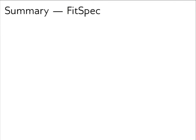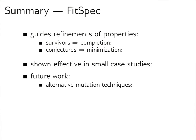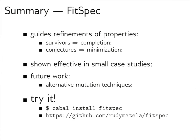In summary, FitSpec is a tool that guides property refinement: survivors guide completion by prompting us to add a property; conjectures guide minimization by prompting us to remove a property. It's shown effective in small case studies and uses enumerative testing both for test cases and mutants. As future work, we could try alternative mutation techniques. You can try it by visiting the GitHub page. Thank you.